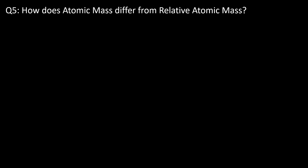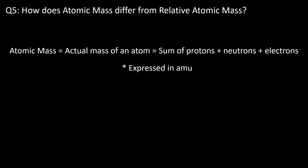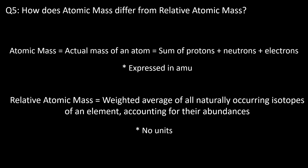Question five: how does atomic mass differ from relative atomic mass? Atomic mass refers to the actual mass of an atom — the mass of a singular atom that accounts for the sum of the protons, neutrons, and electrons. It's usually measured in atomic mass units, or AMU. Whereas relative atomic mass considers a weighted average mass of all the naturally occurring isotopes of an element, taking into account their relative abundances. It's usually dimensionless, having no units, and can often be seen as the mass on the periodic table.